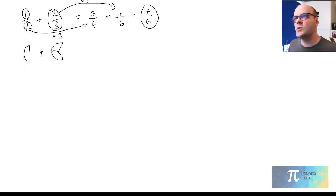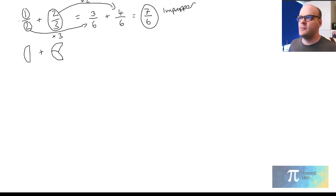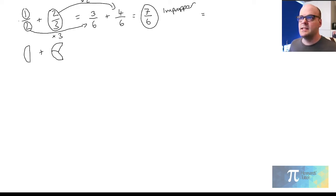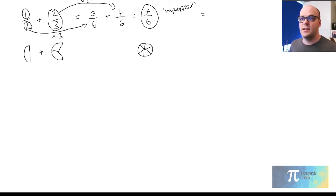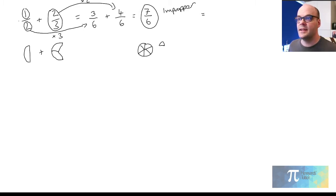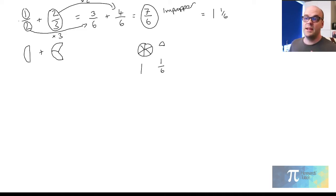Seven sixths is what's called an improper fraction — the numerator is bigger than the denominator. We should change that into a mixed number, which is a whole number and a fraction together. Visually, we've got one whole pizza divided into sixths — that's six slices — but we've got seven slices. So we have one full pizza and one slice of a sixth left over. The answer is one and one sixth.